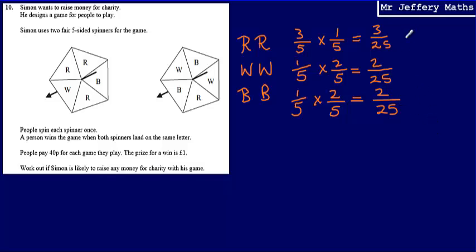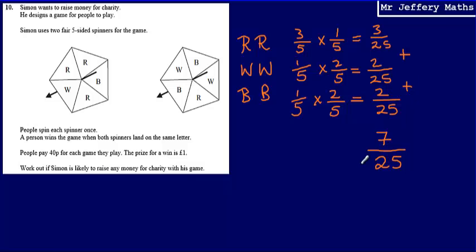In total, the probability that someone would win the game would be seven over 25, by adding together each of those probabilities. So the probability that someone wins the game is seven over 25.